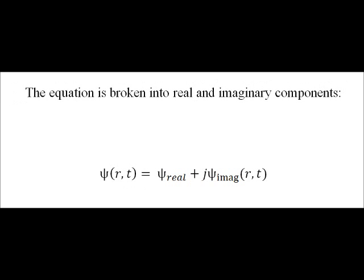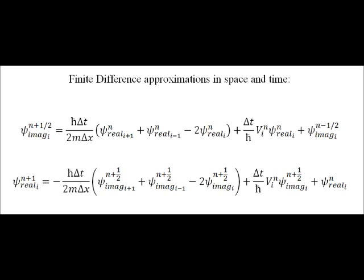Schrödinger's equation is usually broken down into real and imaginary components, seen here. After performing the finite difference approximations in space and time, we can get the following two equations. First, the imaginary half-time step is calculated for all finite space, and that is used for computing the real portion. These were the equations used in the MATLAB simulation.